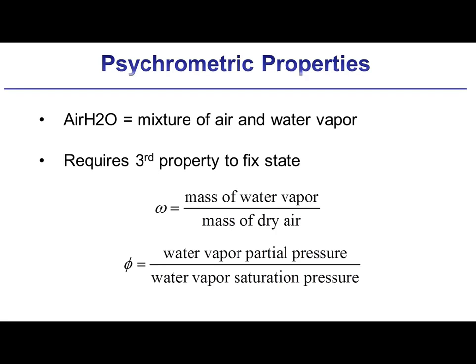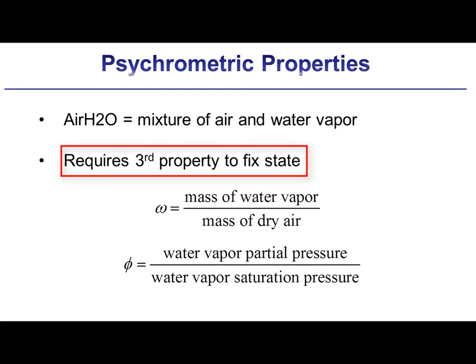EES provides property information for psychrometric mixtures when the fluid air_H2O is used as the fluid name. Air and water vapor mixtures behave according to the ideal gas law at atmospheric pressure. However, psychrometric property functions differ from the ideal gas property functions in that there is an extra degree of freedom introduced related to the concentration of water vapor contained in the air, and therefore an additional third property is required to fix the state when air_H2O is used.